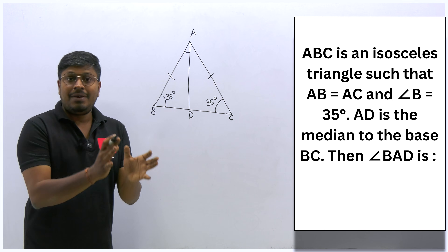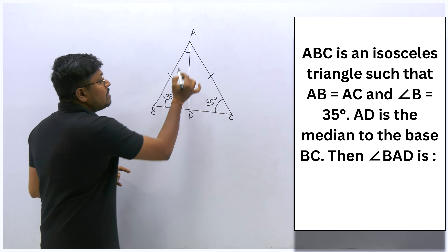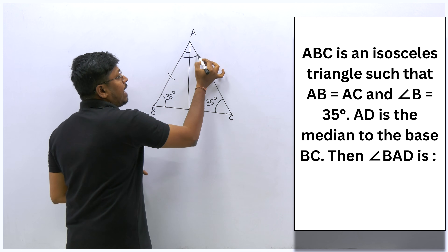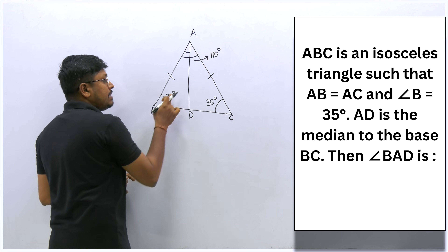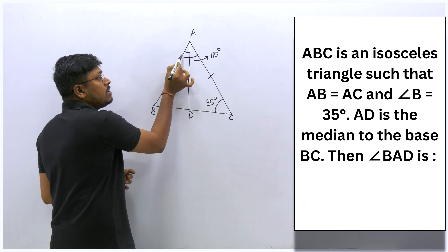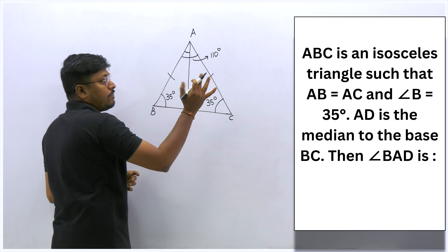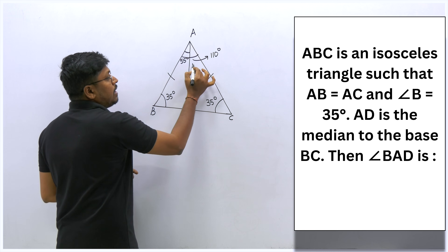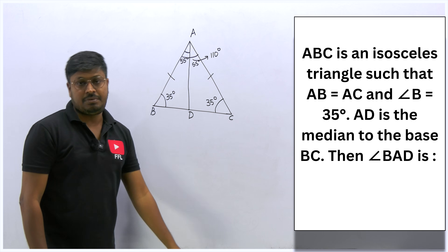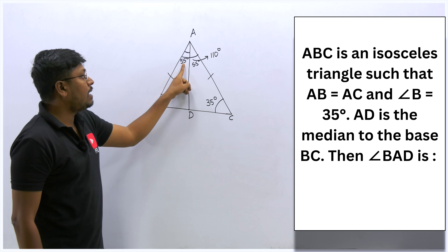The two base angles total 35 + 35 = 70 degrees. So angle A = 180 − 70 = 110 degrees. Since the median bisects angle A equally, angle BAD = 110 ÷ 2 = 55 degrees. The answer to question 2 is 55 degrees.